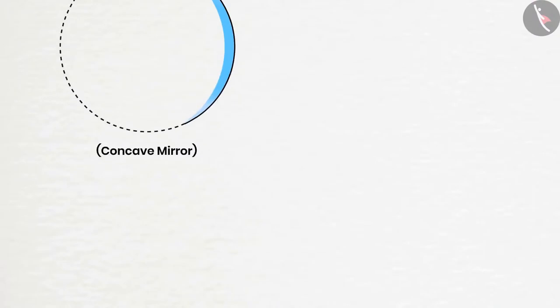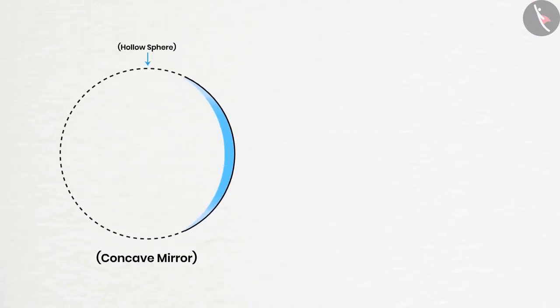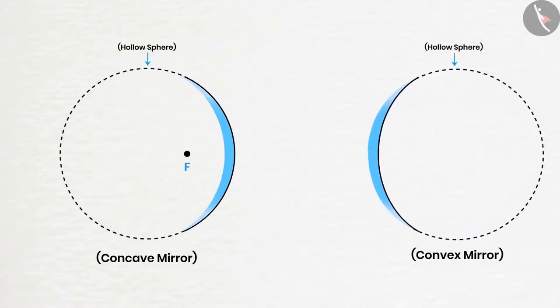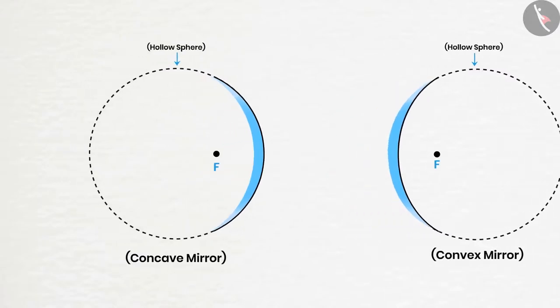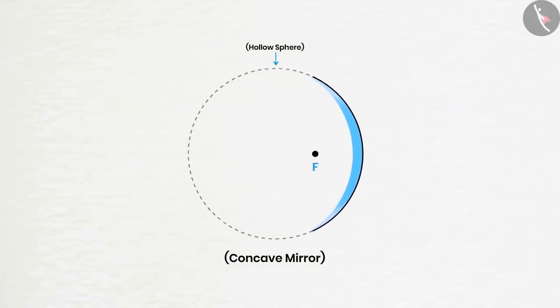Another interesting fact about spherical mirrors is that in the case of concave mirrors, the focus lies in front of the mirror, while in the case of convex mirrors, the focus lies behind the mirror. As we know that a spherical mirror is the part of a sphere and every sphere has a center. This center is known as the center of curvature of that spherical mirror.